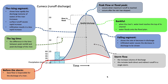Let's take a look at the characteristics of a hydrograph, starting with the rising segment depicted here. The rising segment shows how rapidly the discharge of the river increases. Surface runoff causes a rapid increase and infiltration results in a less rapid increase.